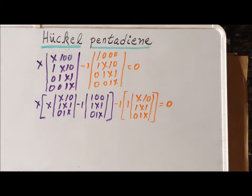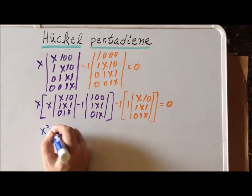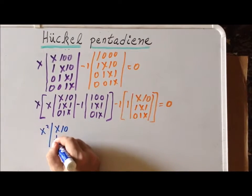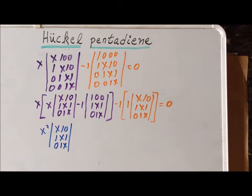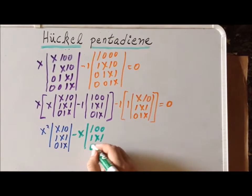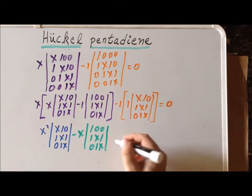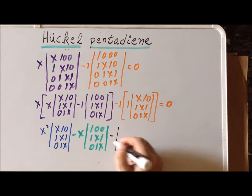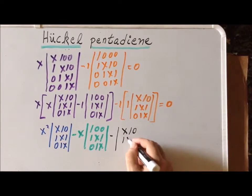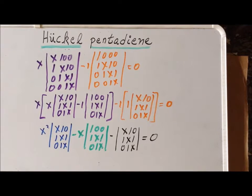We use the distributive law to distribute the coefficient in front over the remaining terms. x times x is x squared, multiplying the first three-by-three determinant. For the second term, x multiplied by minus 1 gives a coefficient of minus x times the determinant with entries 1, 0, 0, 1, x, 1, 0, 1, x. Last, minus 1 times 1 gives minus the determinant with entries x, 1, 0, 1, x, 1, 0, 1, x. This combination of three-by-three determinants and their coefficients is equal to zero.